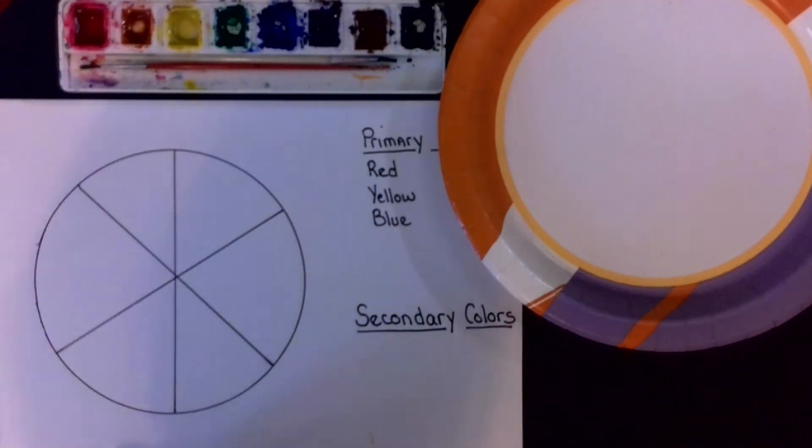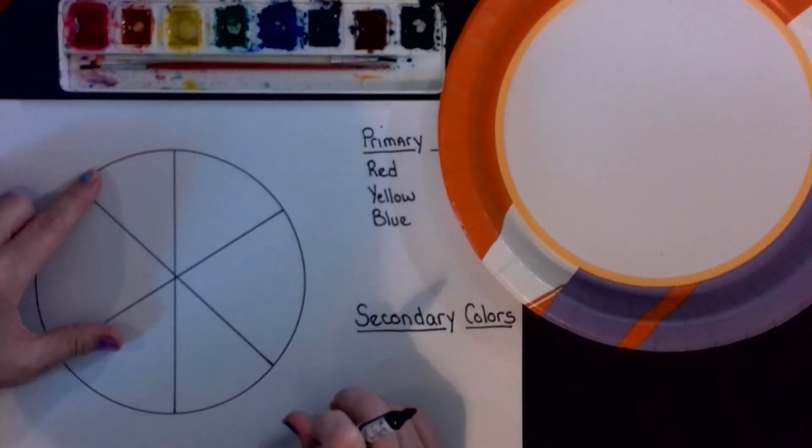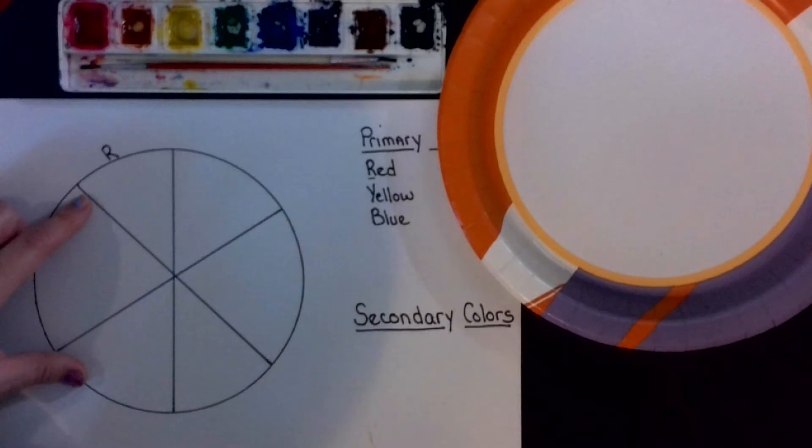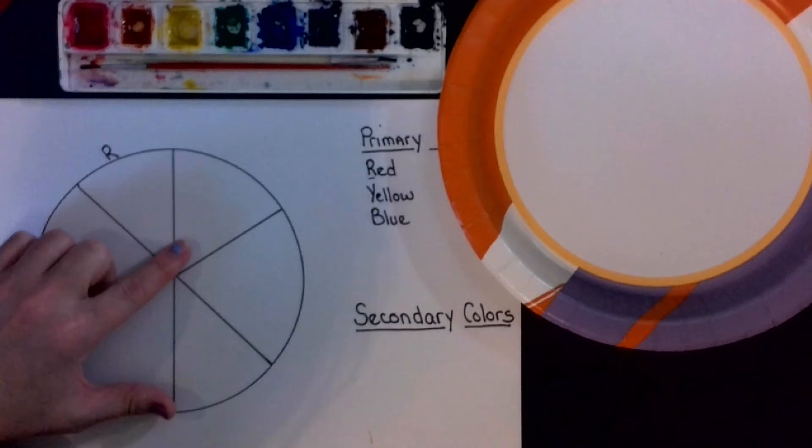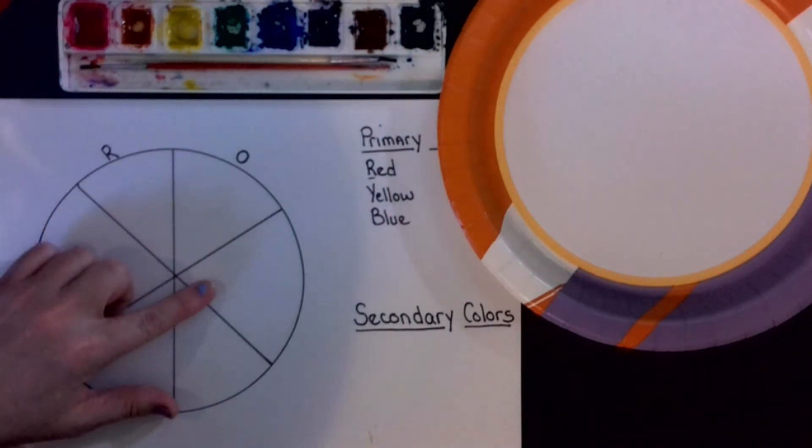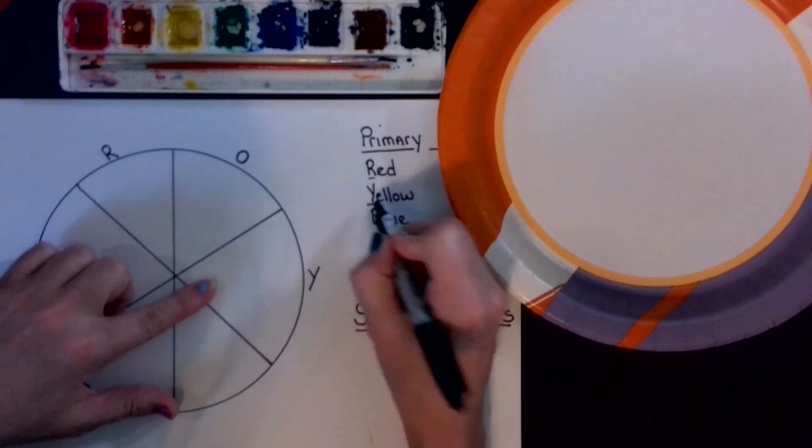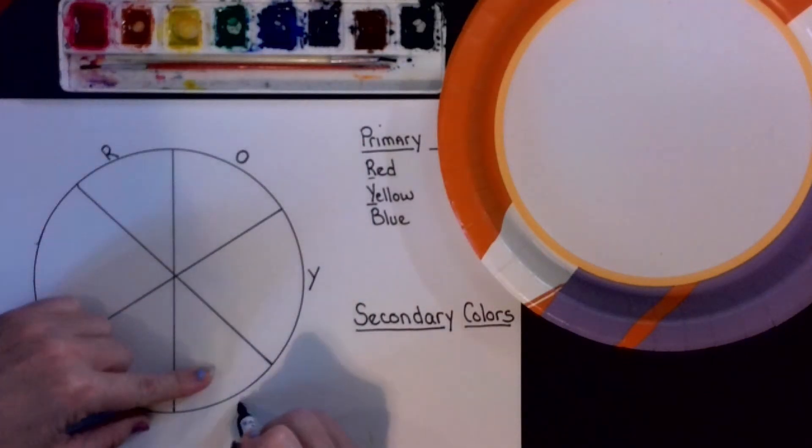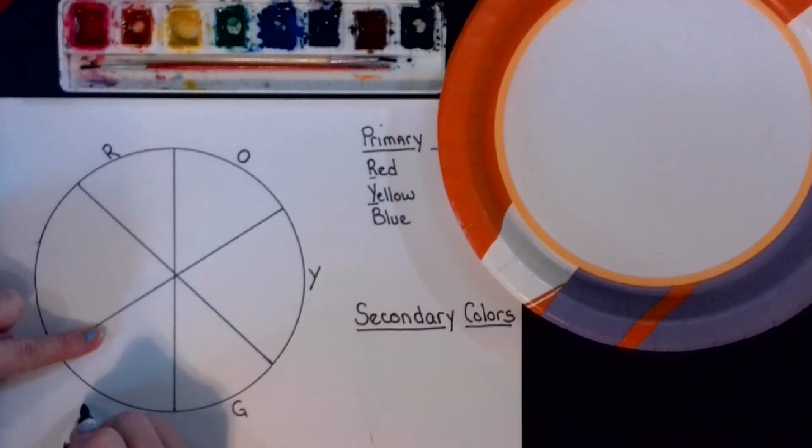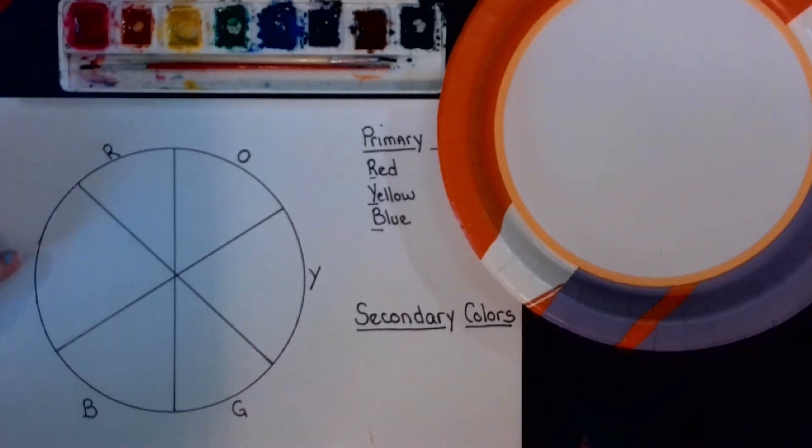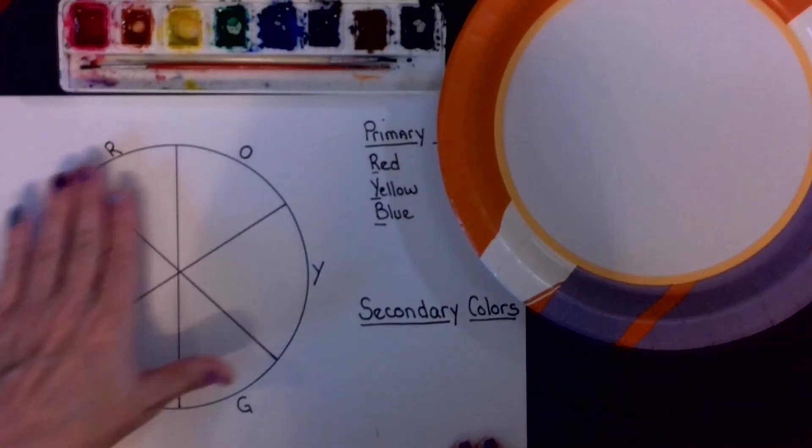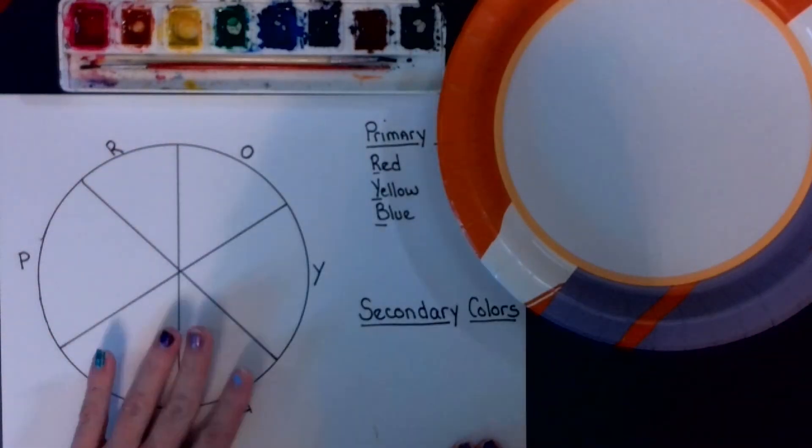All right on our color wheel let's get our pencil again and in one section you're going to put an R for red and the next one let's go ahead and put an O. Then the next one you're going to put a Y for yellow. Your next one go ahead and put a G. Your next one we're going to put a B for blue. And your last one you go ahead and put a P. Okay that's going to help us know where to put our primary colors and then we'll figure out the rest as we go along.